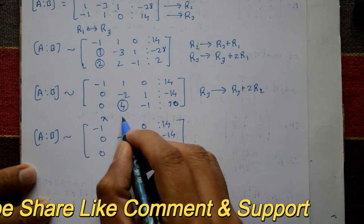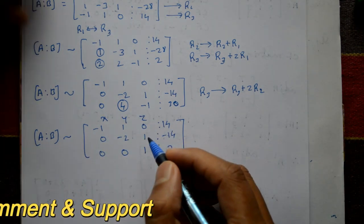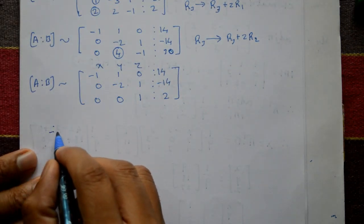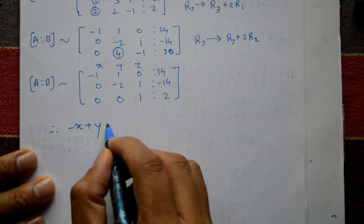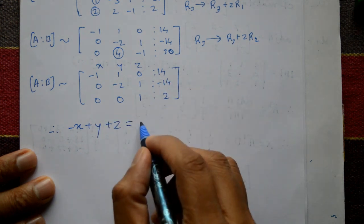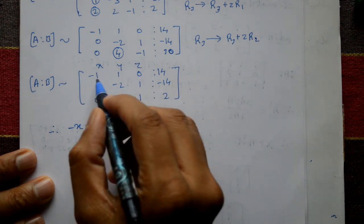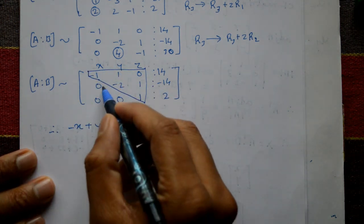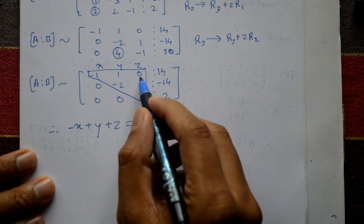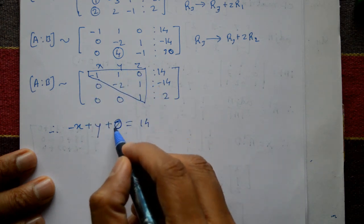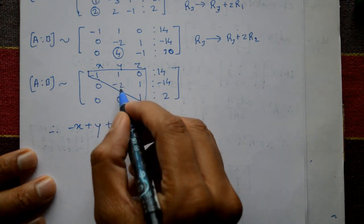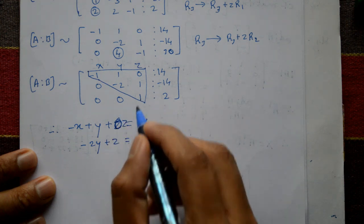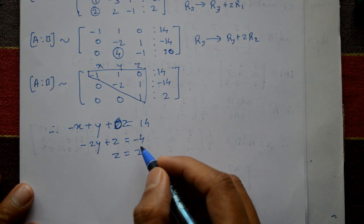This is the upper triangular matrix. Now convert to equation form. First row gives: minus x plus y plus 0z equals 14. Second row gives: minus 2y plus z equals minus 14. Third row gives: z equals 2.